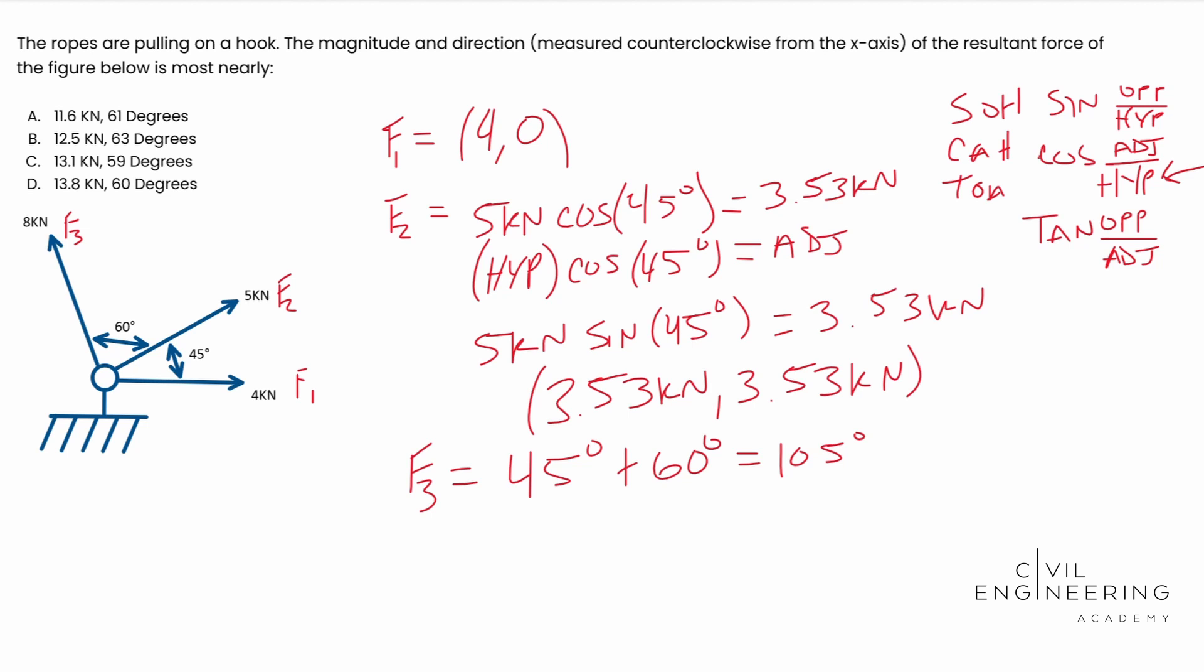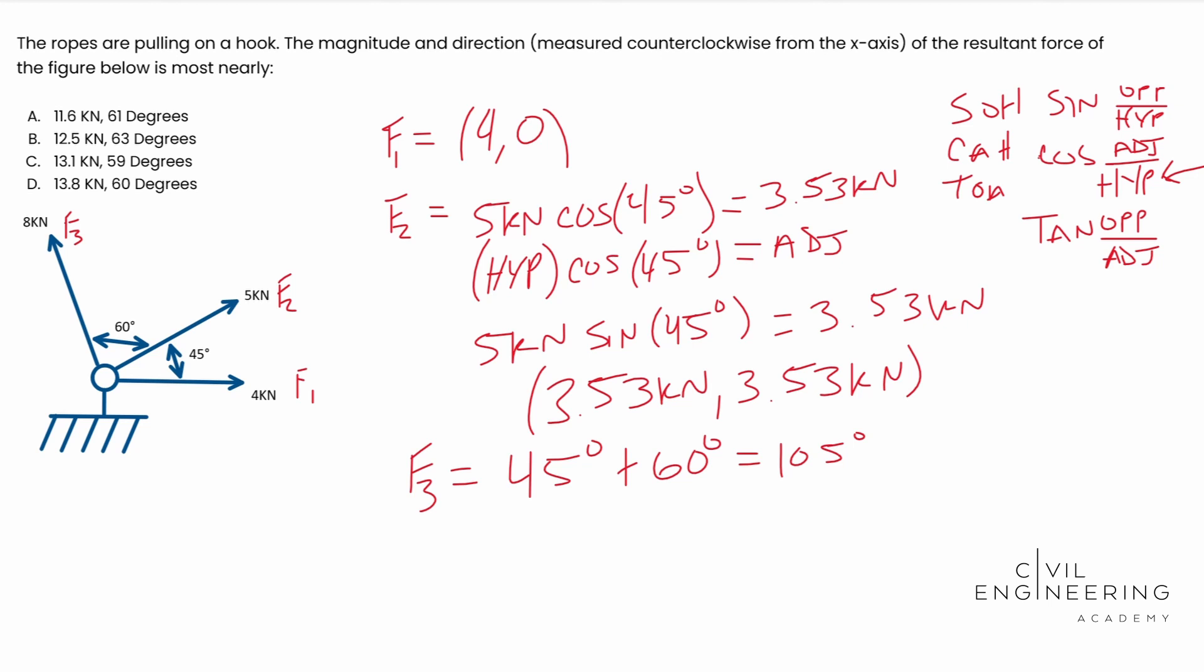Again, I encourage you to pause this video, do it yourself and check yourself to see if you got it right. All right, is that what you got? Minus 2.07 and positive 7.73. It'd be a good time for you to check yourself. Let's go ahead and do minus 2.07 and 7.73. Does this make sense? We have, we can kind of look here, we know that it's in the negative direction, right, and the positive Y. So that does make sense. So we can move on.